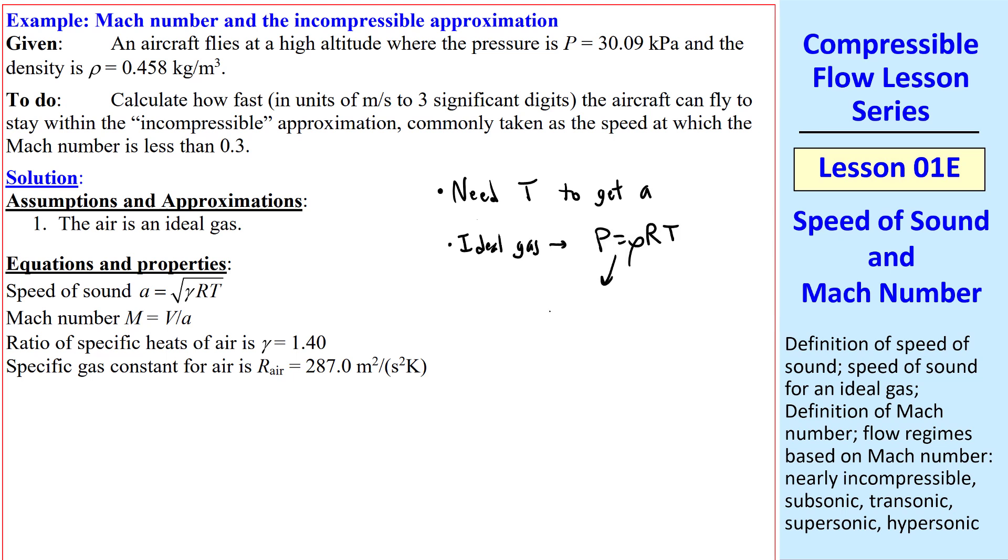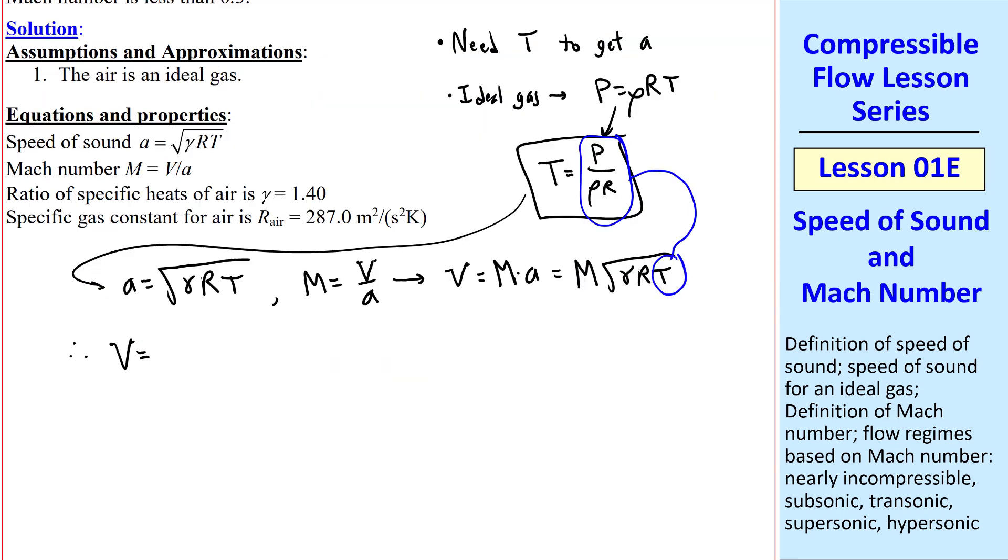Namely, p equal rho rt, from which t equal p over rho r. Now that we have temperature, since A equals square root of gamma rt, and Mach number is V over A, we can solve for V. V equal Mach number times A, equal Mach number times square root of gamma rt. Substituting for t, V equal Mach number times square root of gamma r times p over rho r, or V equal capital M, square root of gamma, p over rho, since the r's cancel out in this equation. This is my answer in variable form.